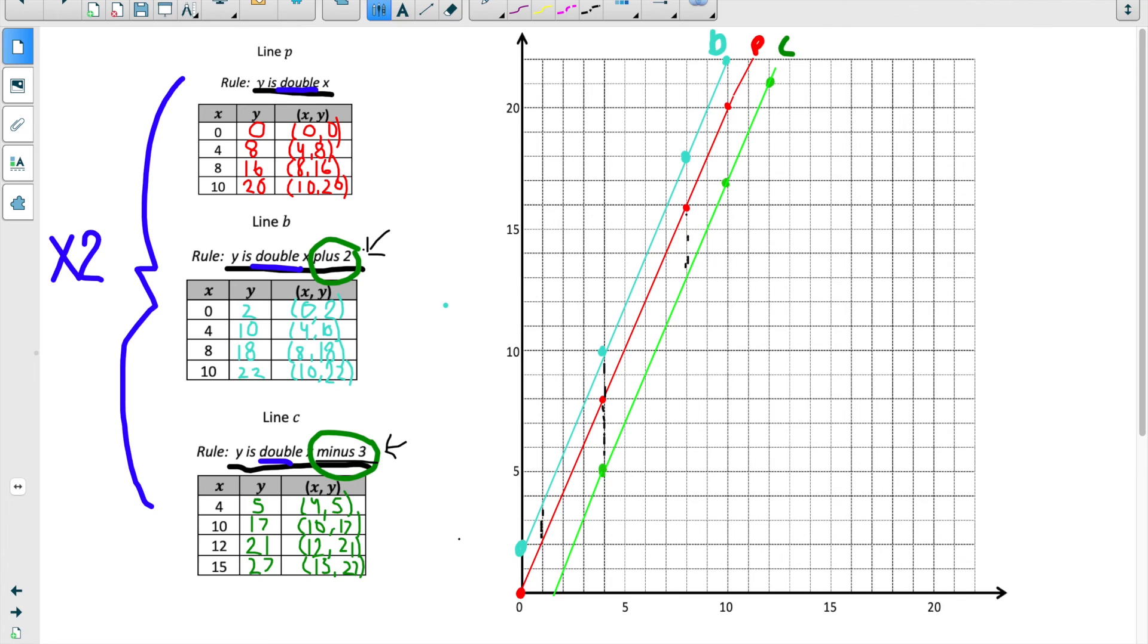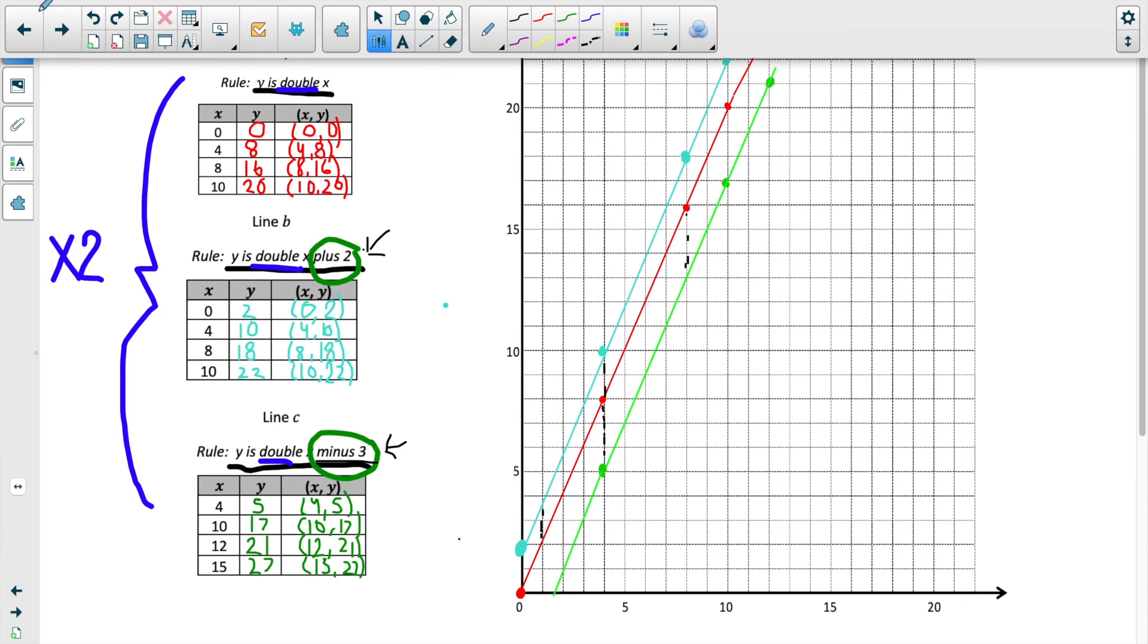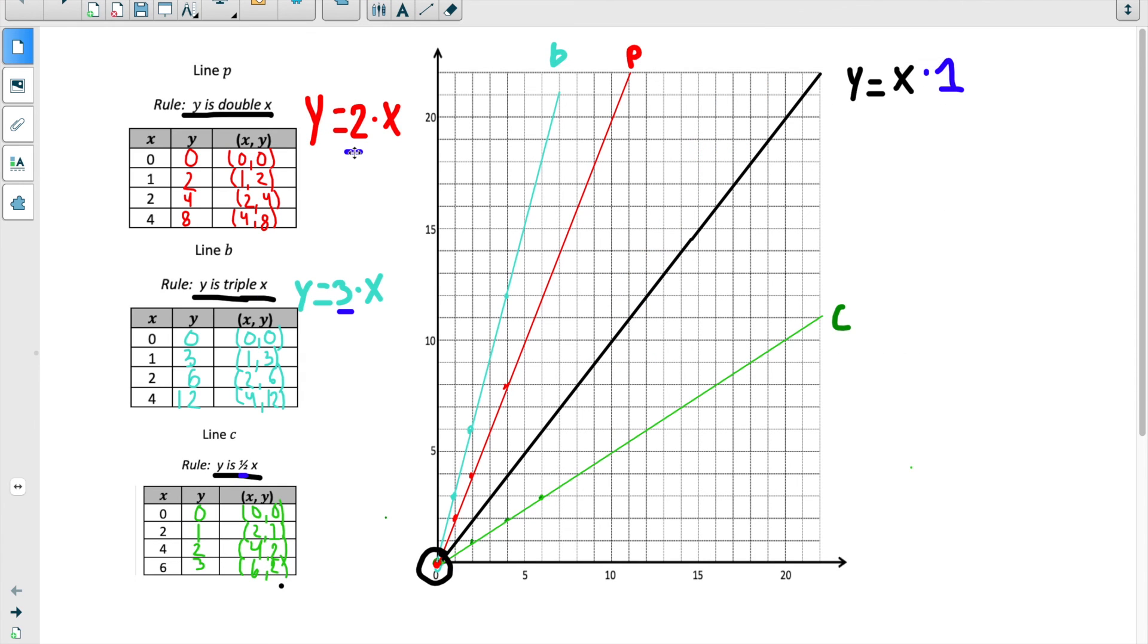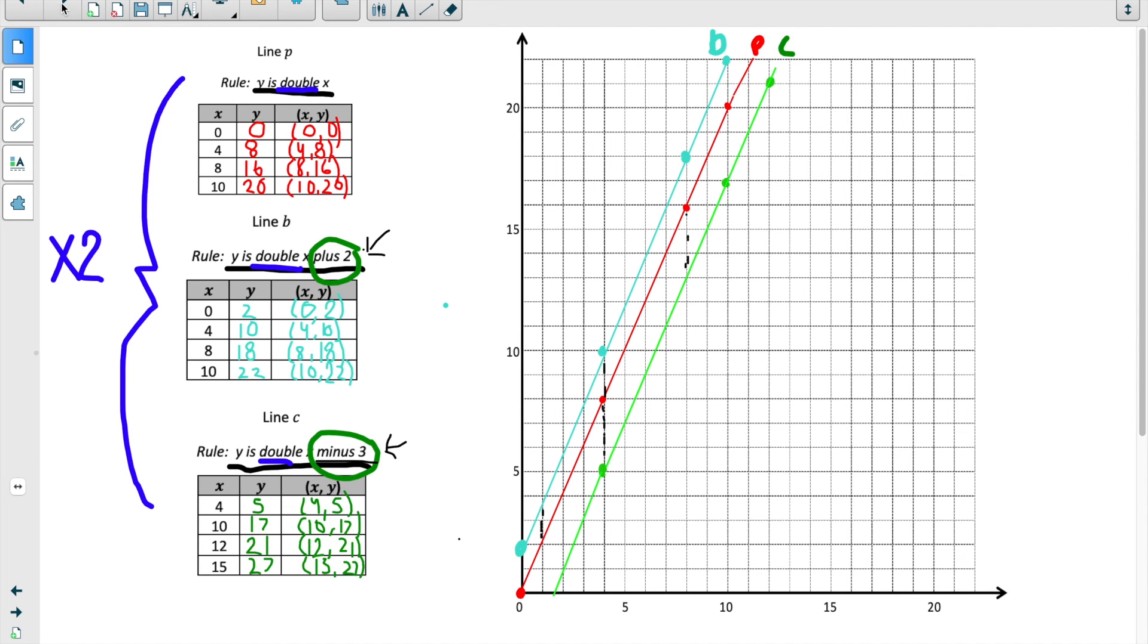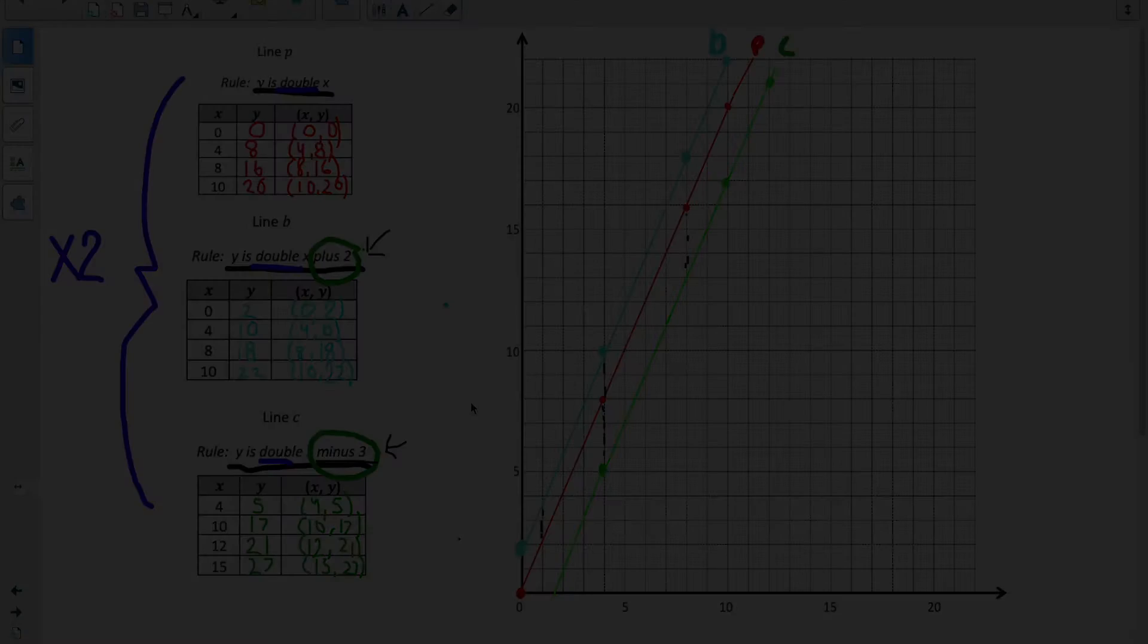So you can really think of it as when we multiply by different amounts, that changes the steepness of the line. And if we're multiplying by different amounts, they're not going to be parallel. But if we multiply by the same amount, they will be parallel. And then adding or subtracting to the rule will make the line go higher or lower on the coordinate plane. So you'll get some practice today. And I can't wait to see your work in Desmos or in your independent packets.